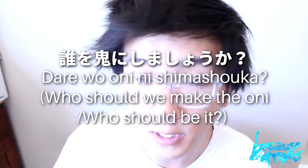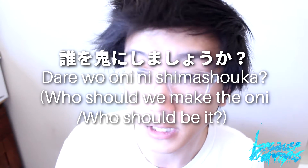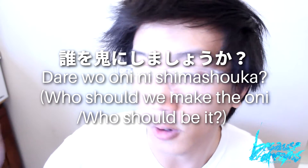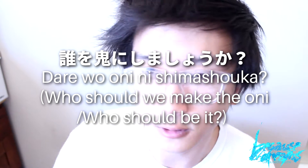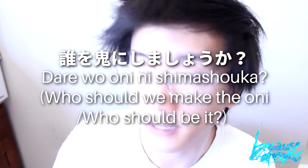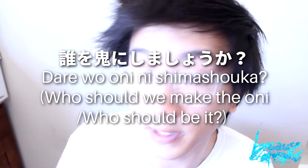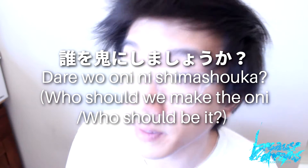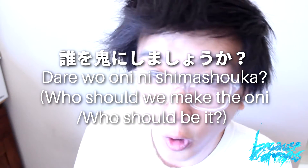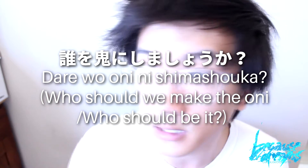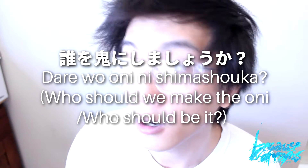For our last example sentence, we have: Dare wo oni ni shimashou ka. This translates to 'Who should we make the oni?' — oni meaning the ogre or demon, which is the title used for the person who is 'it' in a game of tag. The cultural context is probably a bunch of kids playing tag and deciding who should be it. Breaking it down: dare means 'who,' o marks it as the direct object, and oni is a noun meaning 'ogre or demon.'